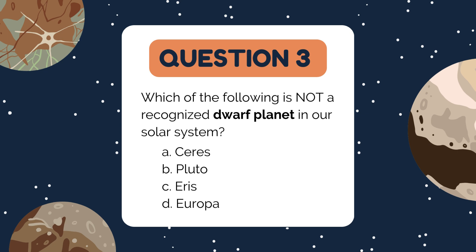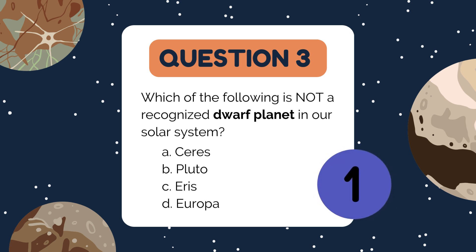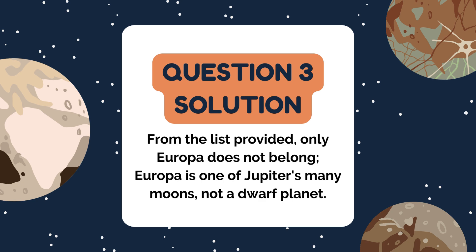Now for a multiple-choice question. Which of the following is not a recognized dwarf planet in our solar system? A. Ceres, B. Pluto, C. Eris, D. Europa. The answer is D. Europa. Europa isn't a dwarf planet — it's one of Jupiter's many moons and is famous for its icy surface and potential to harbor life beneath it. The others — Ceres, Pluto, and Eris — are all officially recognized as dwarf planets.